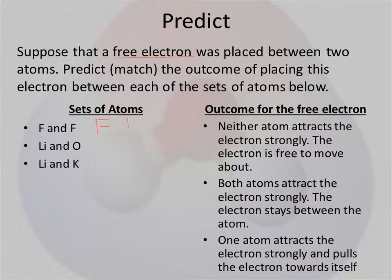So F and F. Both very electronegative. They're both going to be pulling on that electron. But essentially, they're going to cancel each other out because they're both pulling on the electron with the same amount of force. They're both the same electronegativity. So that would be this one - both atoms attract the electron strongly, but the electron is going to stay between the two atoms equally.